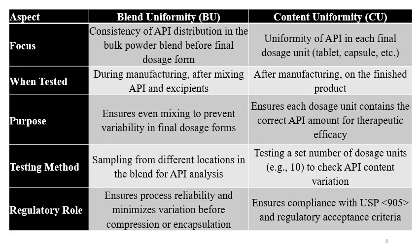The testing method for blend uniformity involves sampling from different locations in the blend for API analysis. The testing method for content uniformity involves testing a set of dosage units, like 10 units, to check API content variation. Additionally, stratified sampling is done for content uniformity testing to ensure confidence in meeting USP 905 requirements.